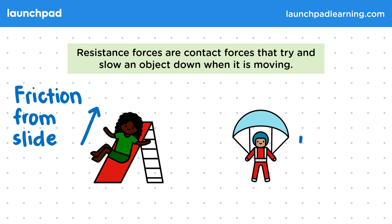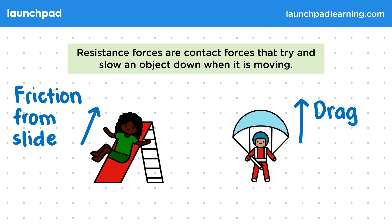When someone is parachuting, this is an example of drag, as the parachute moves through a fluid — which in this example is air. The drag force occurs because the parachute and the person collide with particles in the air as they move.